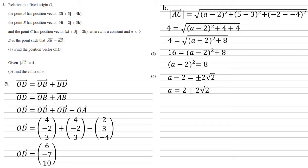Hence it can't be 2 plus 2√2. So a must equal 2 minus 2√2.